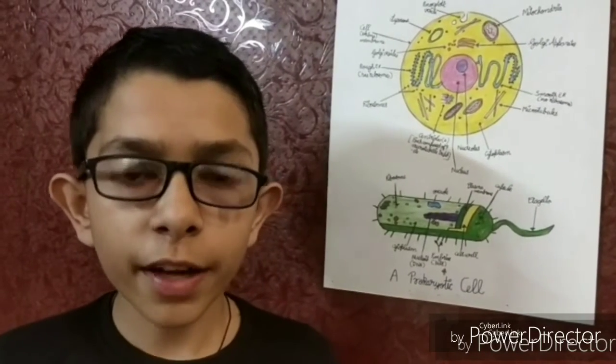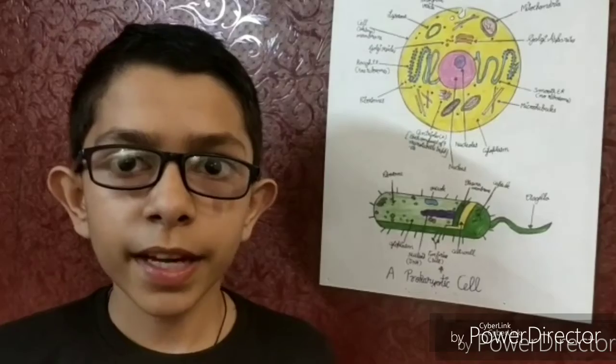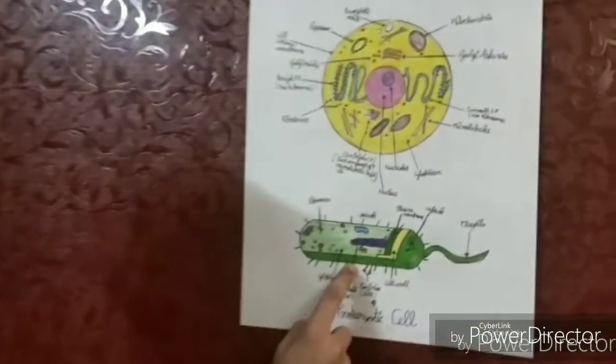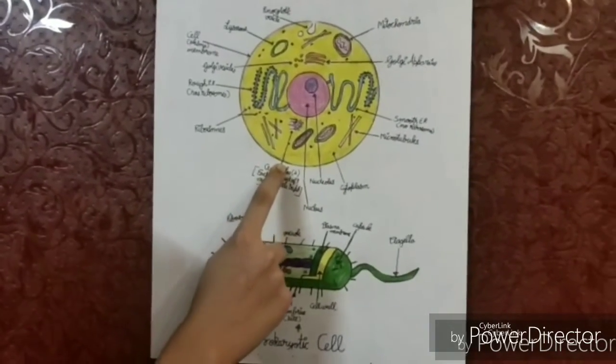Now comes the ribosomes. They are either free or in the rough endoplasmic reticulum. They are the sites for protein manufacture. They are found in both prokaryotic and eukaryotic cells. They are complex of RNA, which is ribonucleic acid, and proteins.